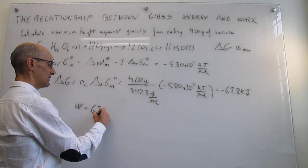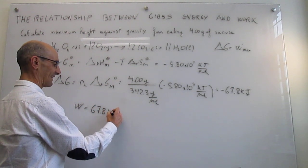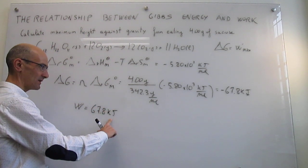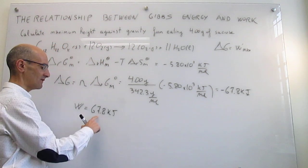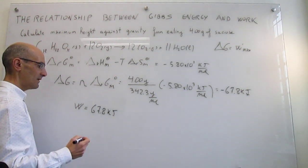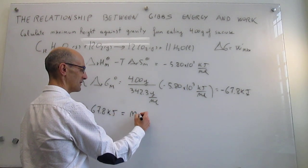But when we reinterpret that as work against gravity, that is going to be a positive number. So we change that to 67.8 kilojoules. Now this is the work against gravity, not the work that you're extracting from the reaction, which is negative, but the work against gravity that you can do, and this is simply going to be equal to mgh.